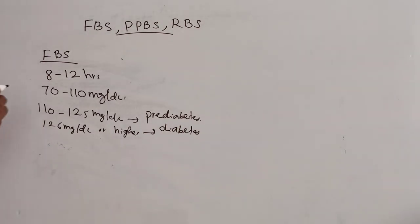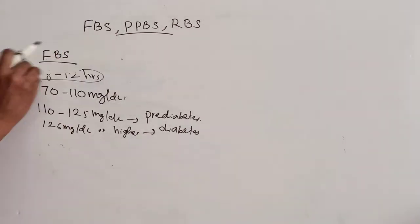That is about FBS. The sample is collected after 8 to 12 hours of overnight fasting and the normal value is 70 to 110 mg per dl. Next one is PPBS.